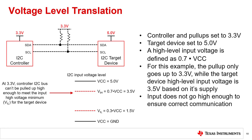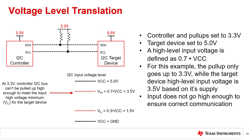Mismatched voltages in the supply can disrupt communication or even damage a device. The connection of the pull-up resistors determines if the output voltage of one overdrives or underdrives the input of the next device. Here is one example of supply mismatch with different I2C devices. In this example, the controller and the pull-ups are set to 3.3 volts, while the target device is set to 5 volts. In the I2C specification, there are minimum and maximum voltages required for a digital input voltage to be accurately interpreted as a digital high or low.